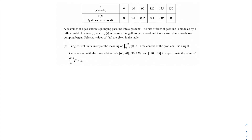Welcome back, my AP Calc champions. In this problem, we're going to be talking about gas. We have a data table where we have time measured in seconds, and then we have a function with respect to time in gallons per second. A customer at a gas station is pumping gasoline into a gas tank. The rate of flow of gasoline is modeled by some differentiable function f, where f of t is measured in gallons per second, and t is measured in seconds since the pumping began. Selected values of f of t are given in the table.